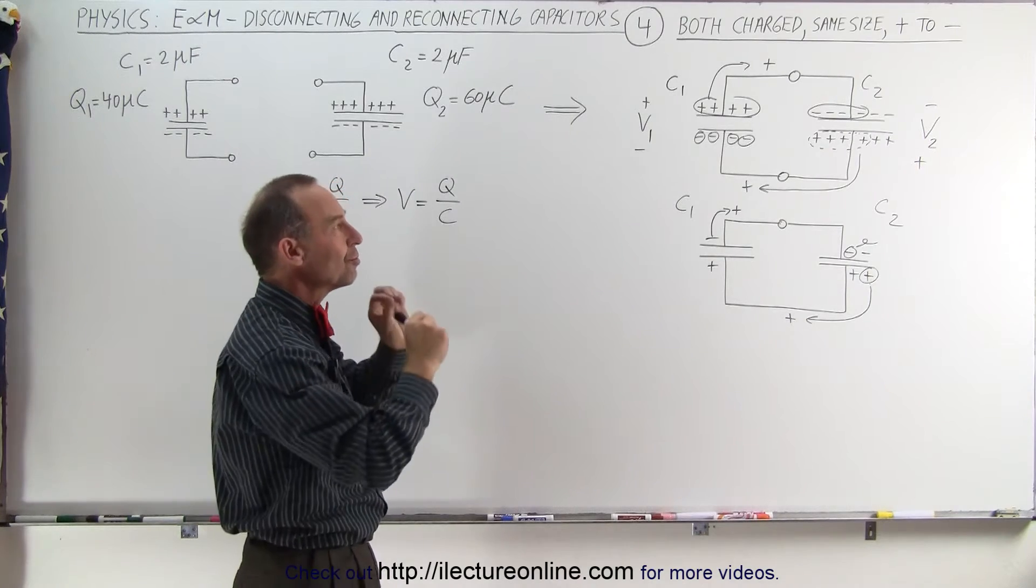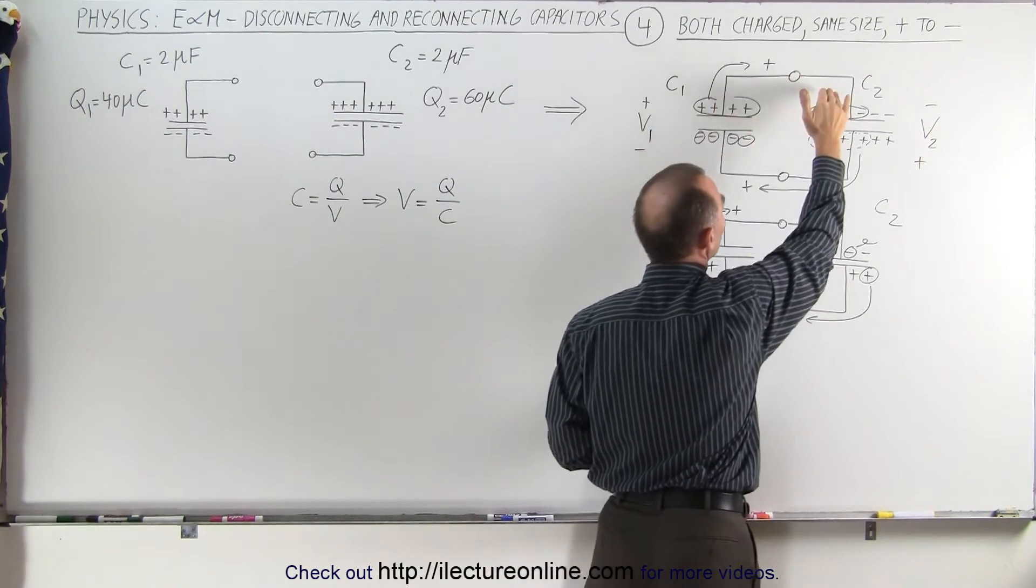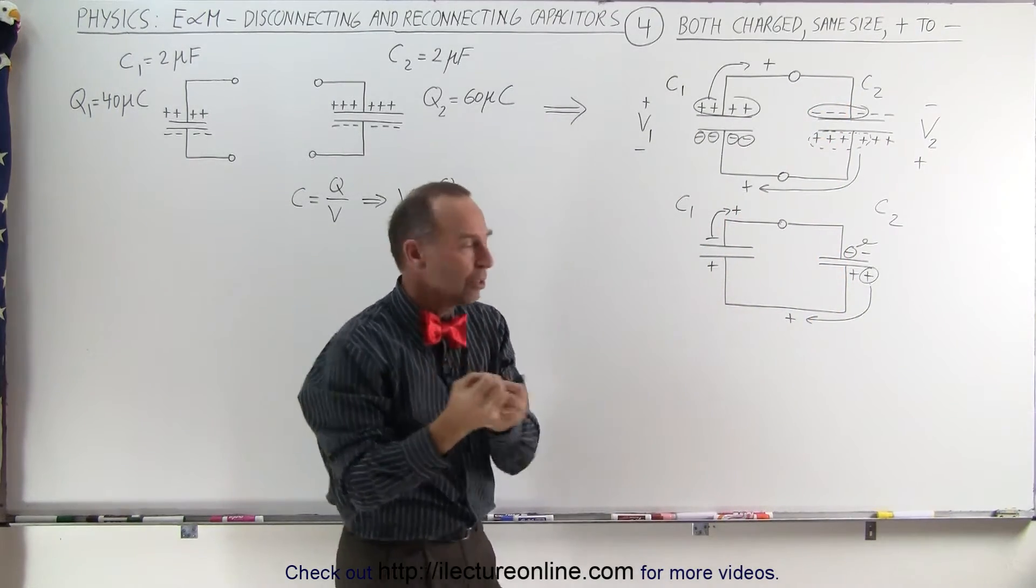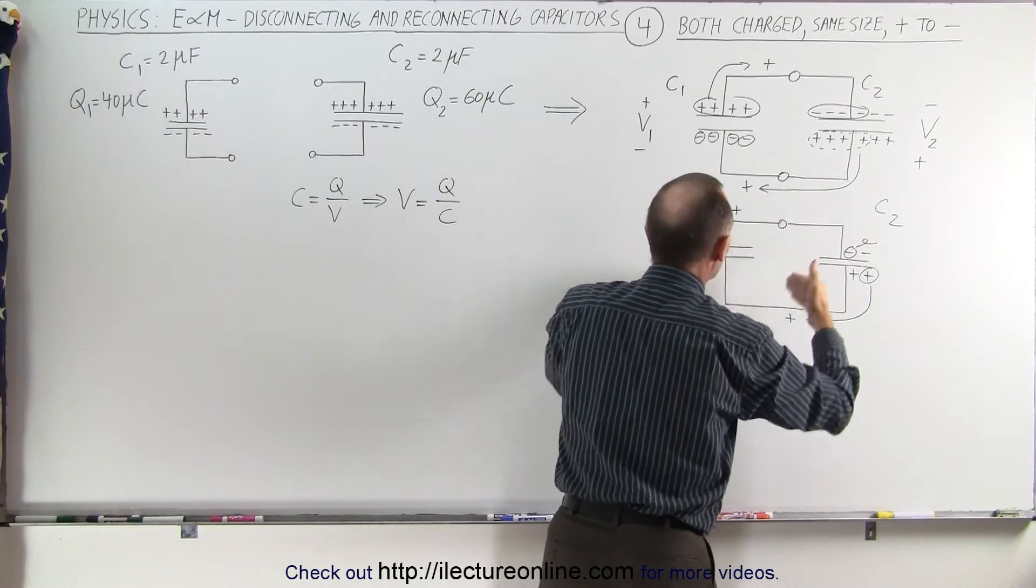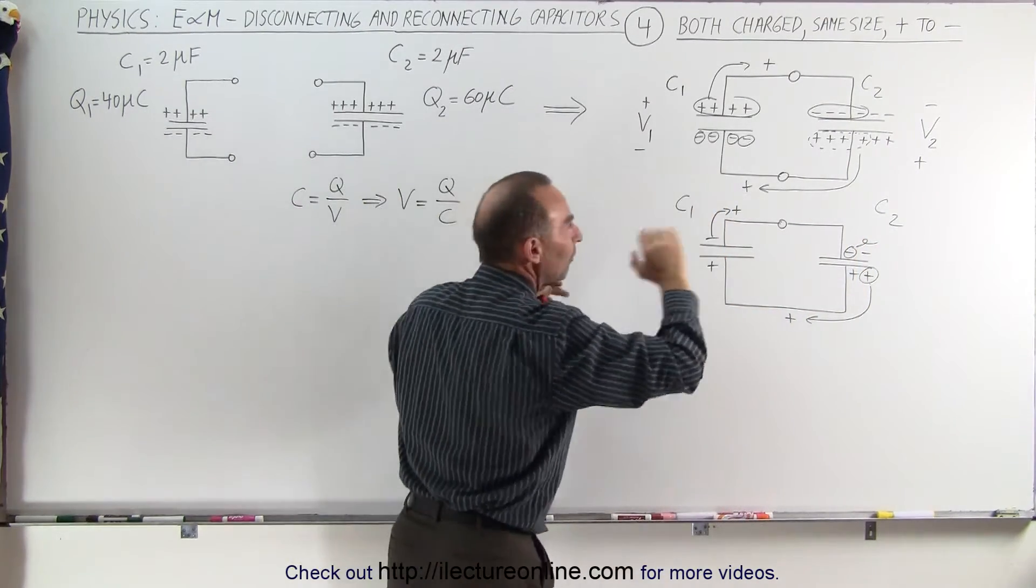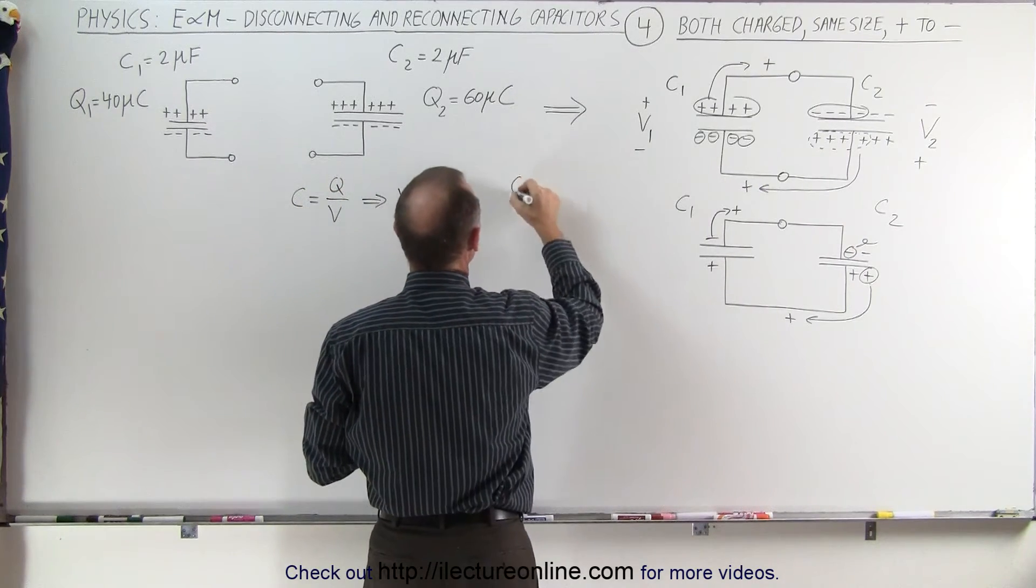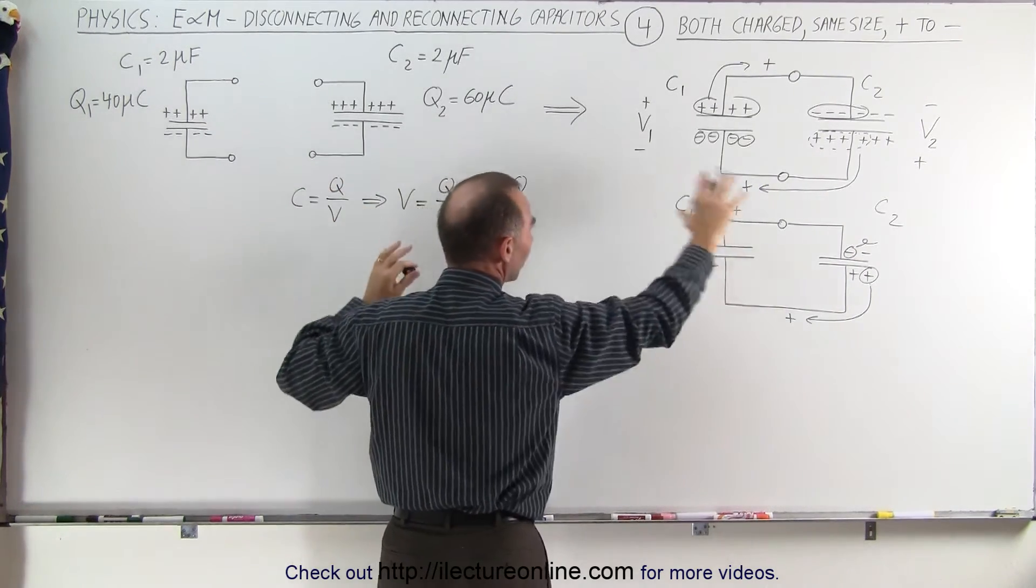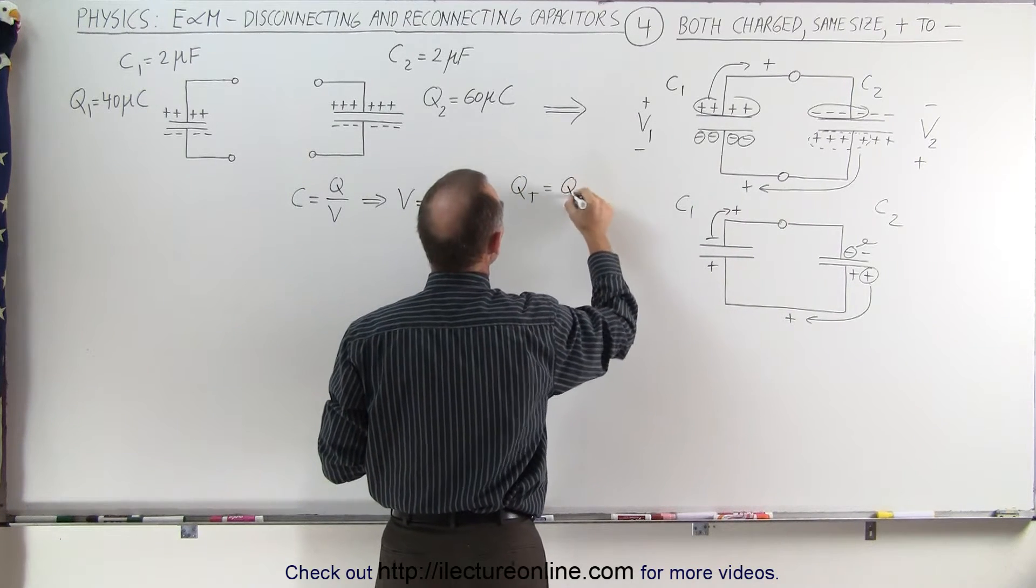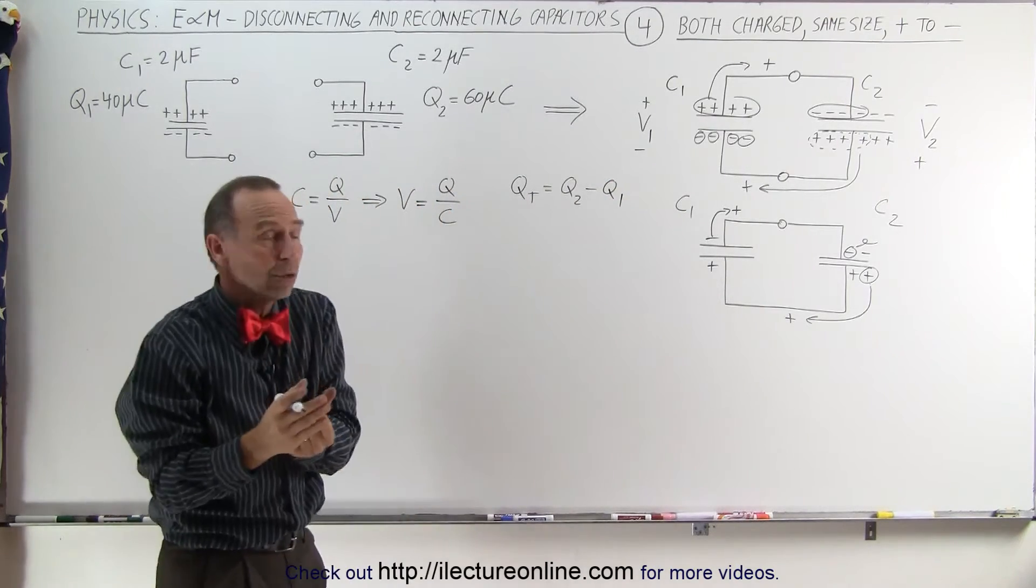The key here is that when you're connecting the positive end of one capacitor to the negative end of the other capacitor, the total charge remaining to be divided over the two capacitors is going to be the difference of these two charges, not the sum like we saw in the previous video. In other words, Q total after the charges begin to move is equal to Q2 minus Q1.